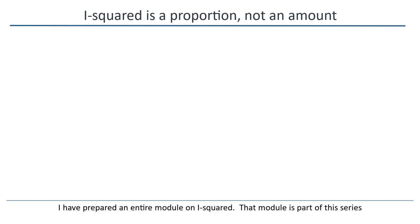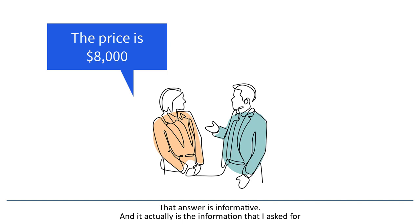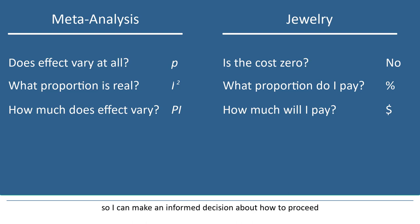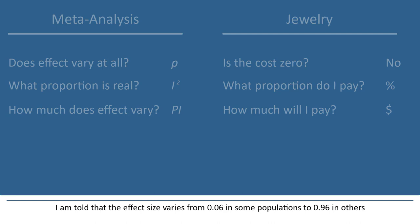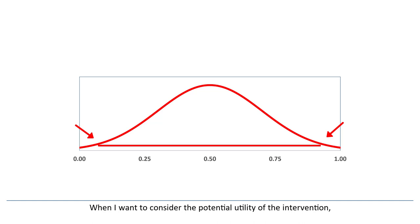Finally, suppose that I asked the salesperson the cost of the pearls, and she says the price is $8,000. That answer is informative, and it actually is the information that I asked for. It might not be what I had hoped to hear, but at least I know what the situation is so I can make an informed decision about how to proceed. The analogy to meta-analysis would be if I ask about heterogeneity and I'm given the prediction interval: I'm told that the effect size varies from 0.06 in some populations to 0.96 in others. When I want to consider the potential utility of the intervention, this is the information that I need.